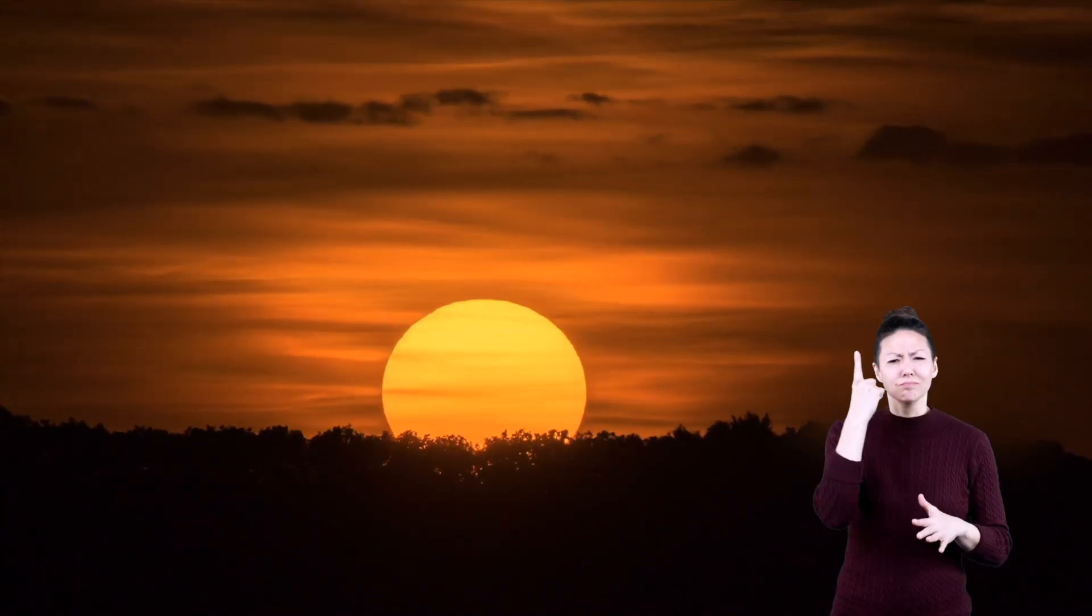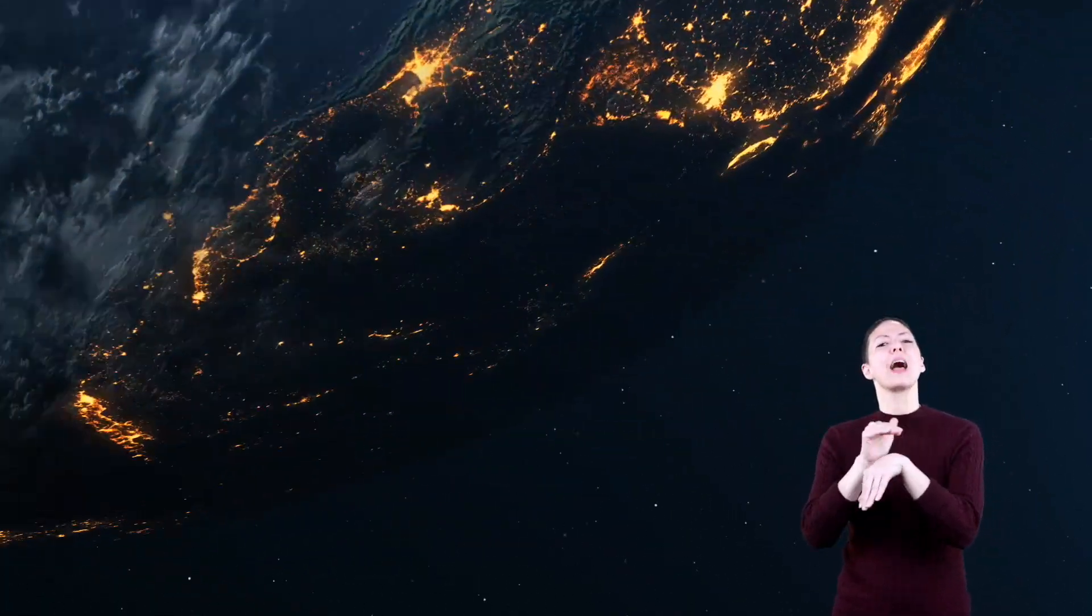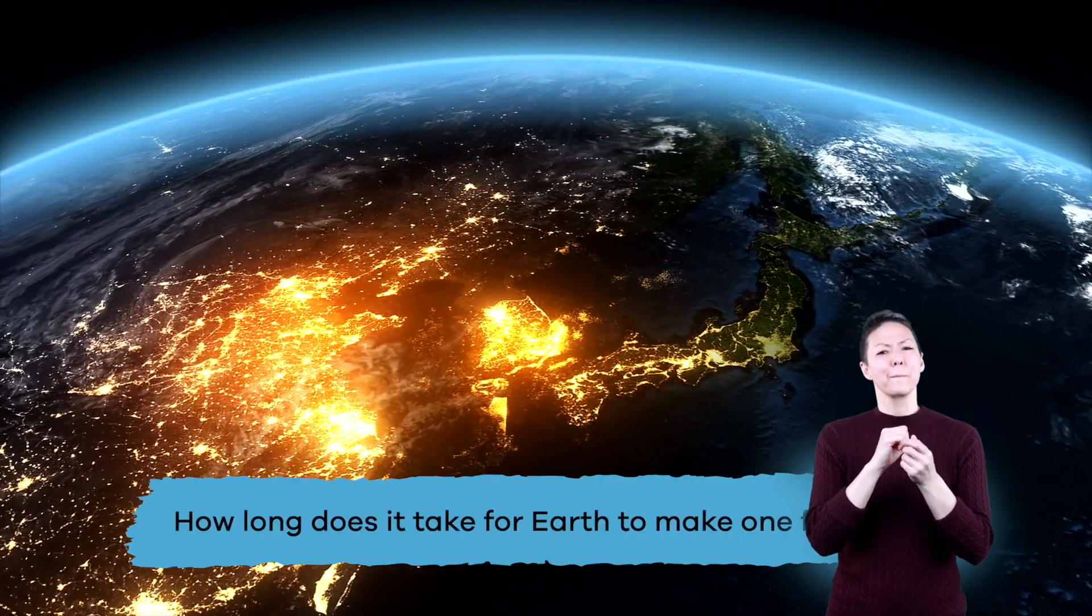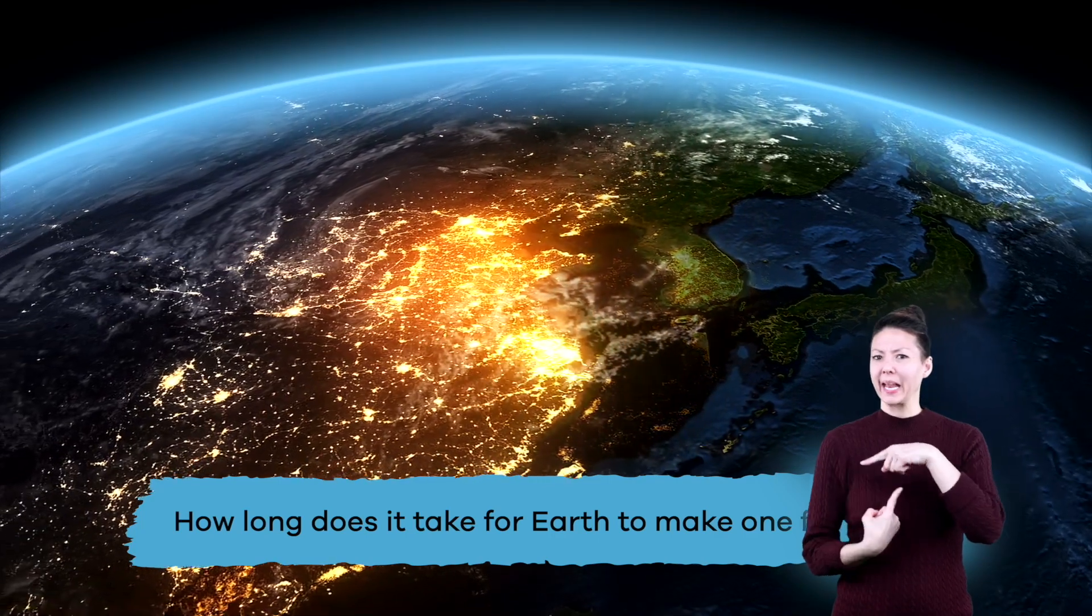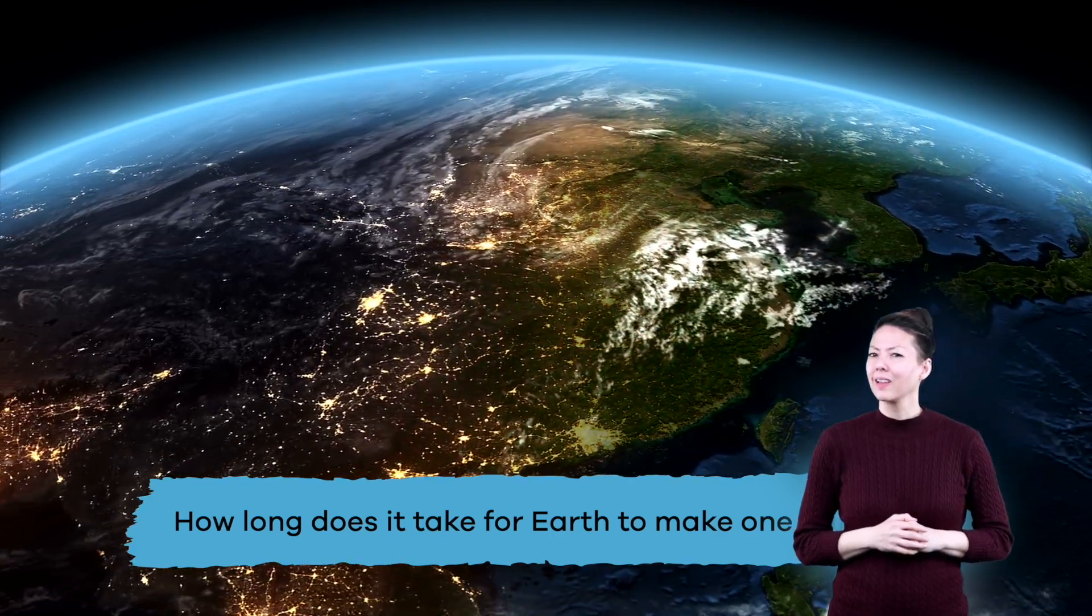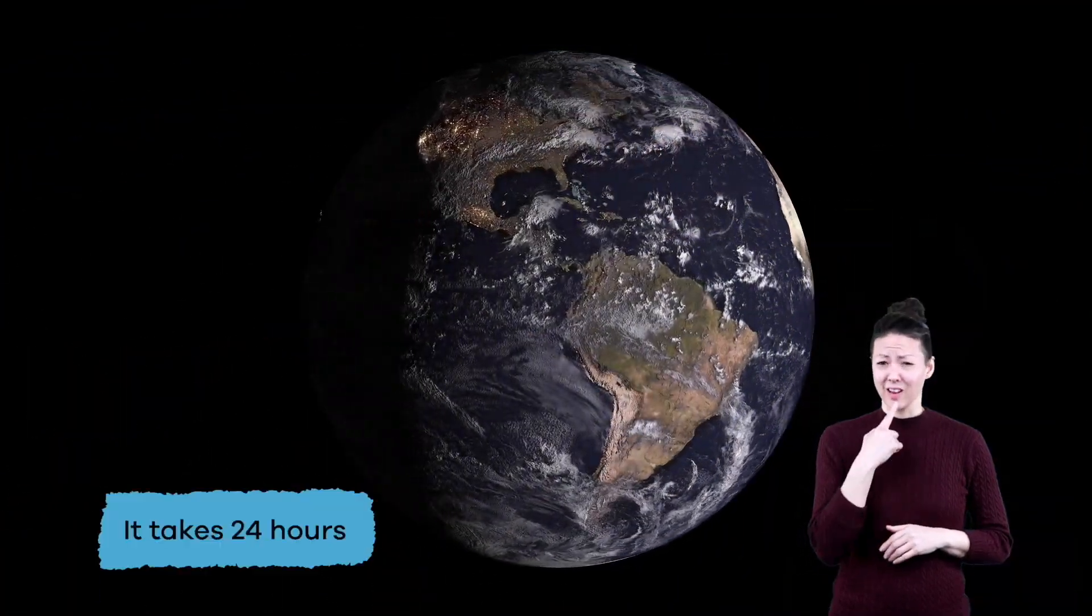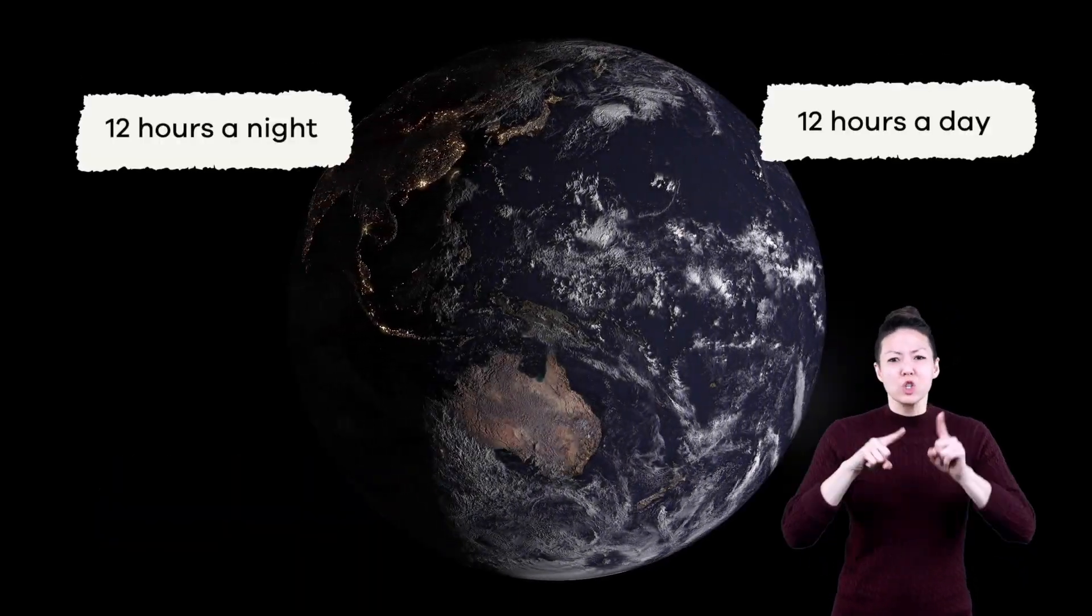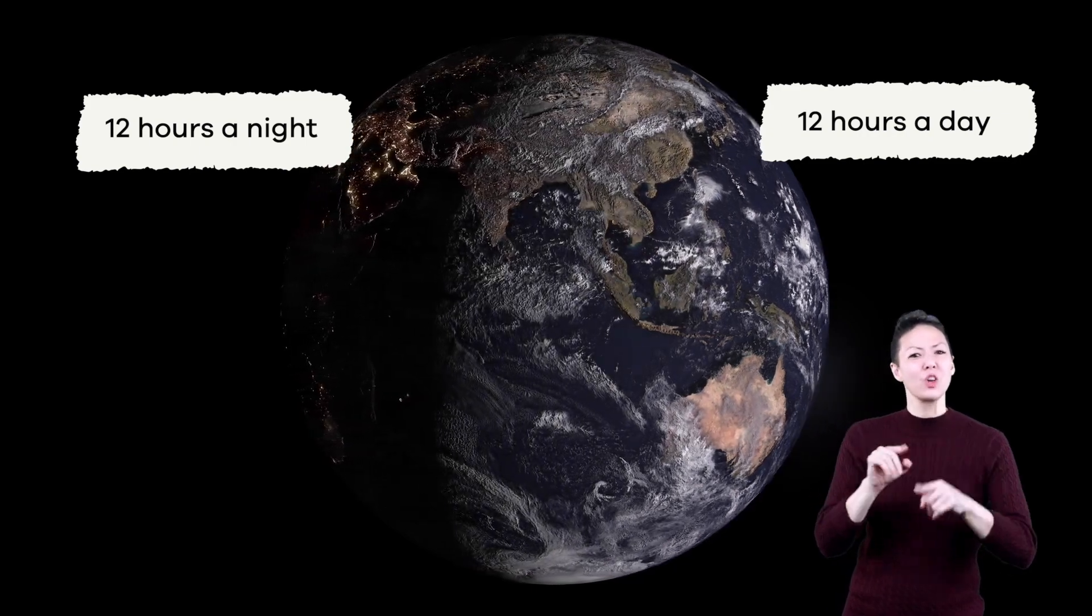Have you ever wondered where the sun goes each night? It doesn't actually go anywhere. It's the Earth that moves. And when it's daytime on one side of the planet, it's nighttime on the other. Guess how long it takes Earth to make one full spin? Did you say 24 hours? You're right! 12 hours during the day and 12 hours during the night.